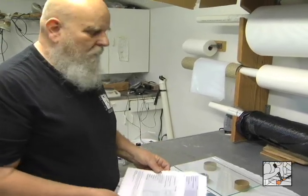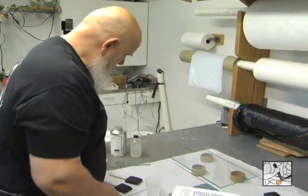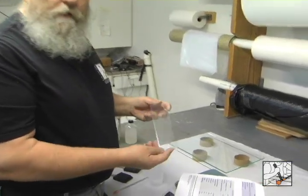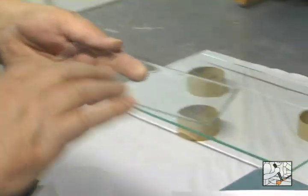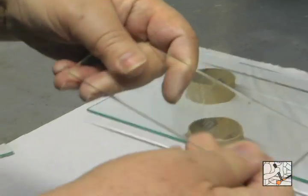Now, full cure at room temperature, we say is about four days. This is a piece of glass that I coated yesterday, it's just a window glass, and I can touch it and not get fingerprints on it. So, this is tack free, but it's not fully cured.